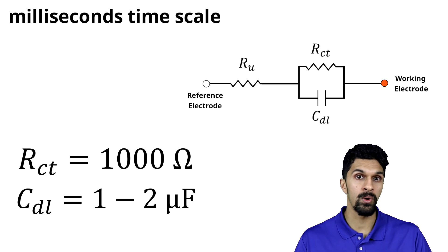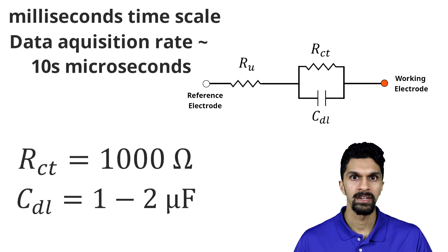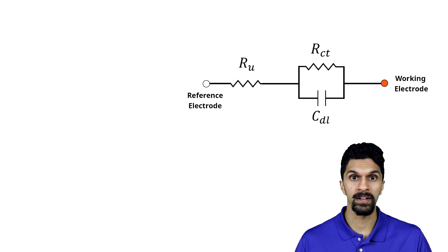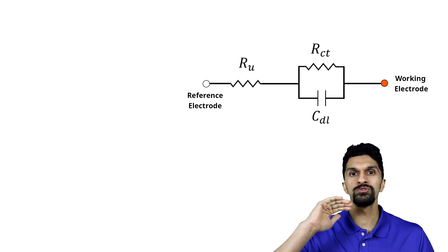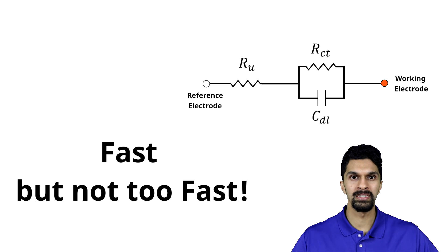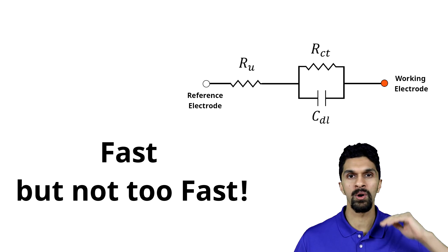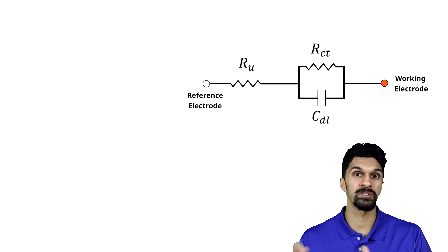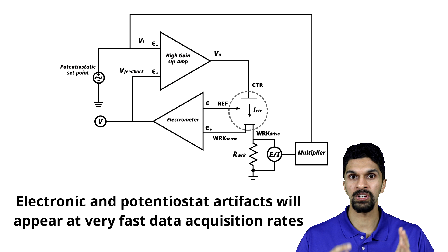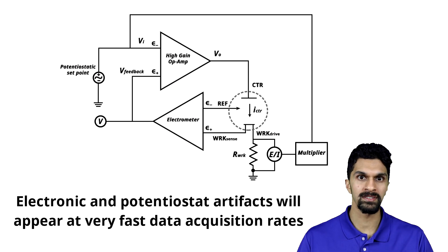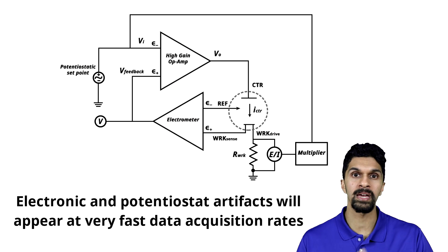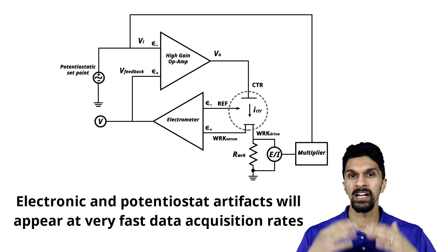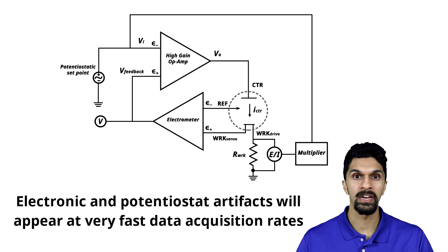For a process on the millisecond time scale, you need to acquire data on the tens-of-microseconds time scale, which is about a hundred times faster. However, you shouldn't go too fast — acquiring data on the nanosecond time scale will cause problems because you'll start to pick up electronic artifacts such as cell cable capacitance. As a general rule of thumb for both current interrupt and potential step techniques, make sure your data acquisition rates are about a hundred times faster than the time scale of the electrode interface process you are studying.